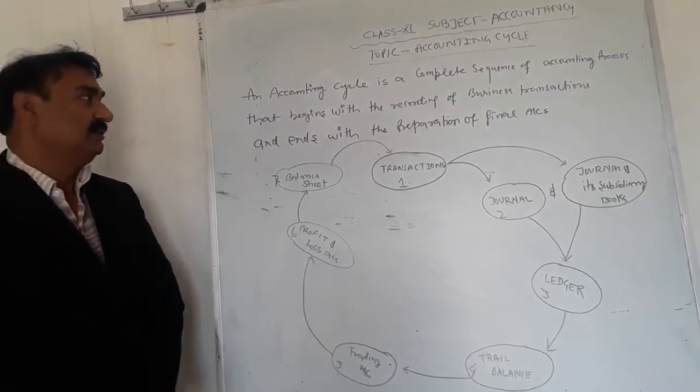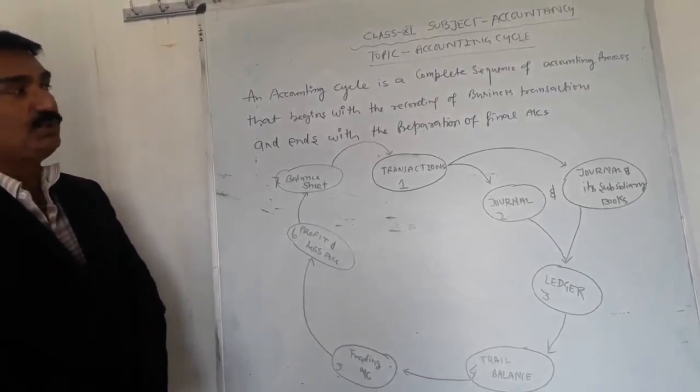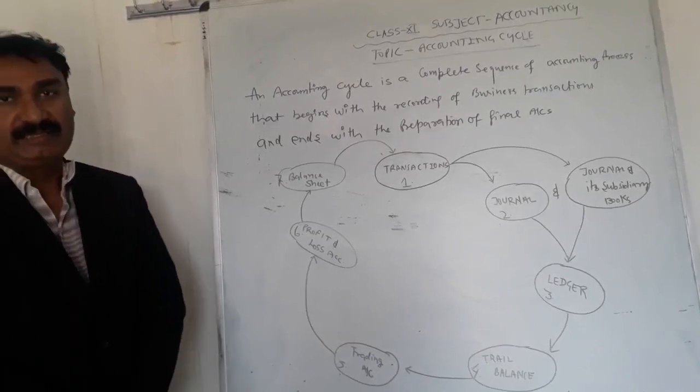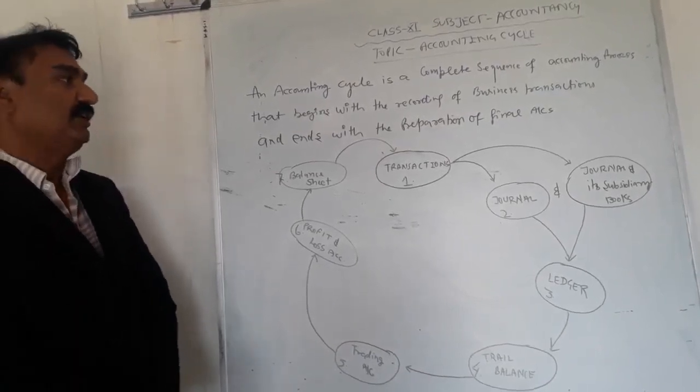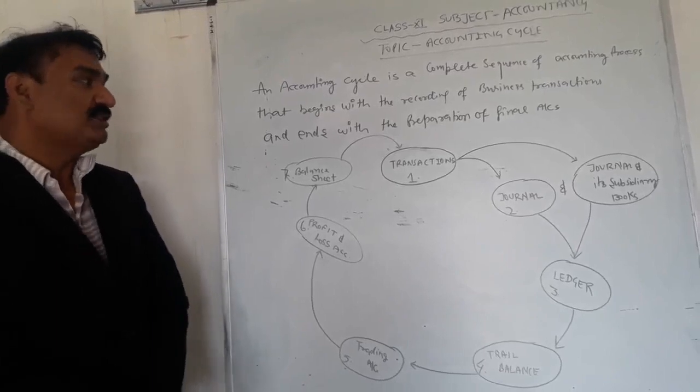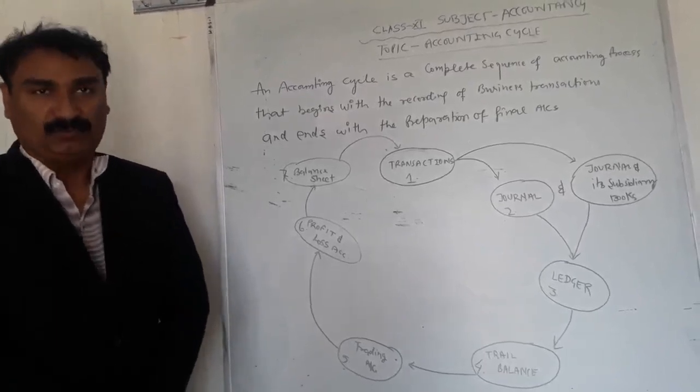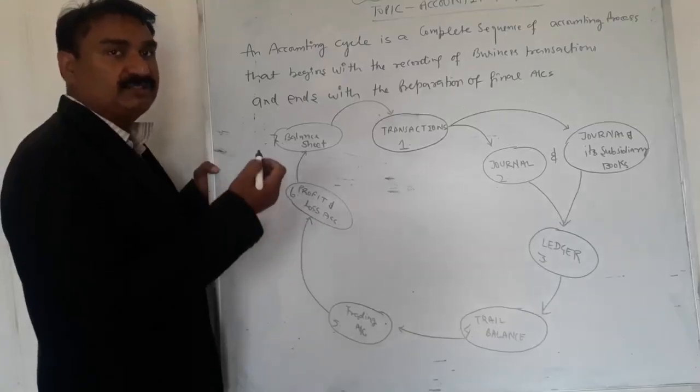An accounting cycle is a complete sequence of the accounting process which starts with the recording of business transactions and ends with the preparation of final accounts. My dear students, let's start the process of accounting.